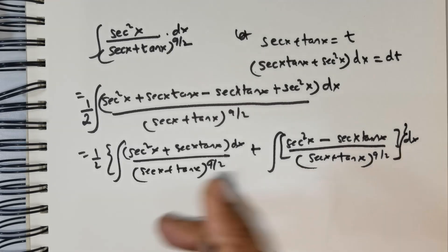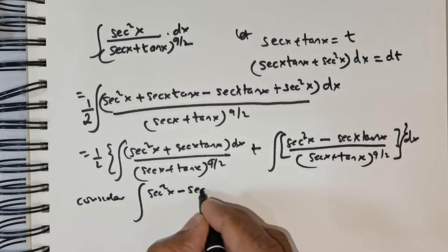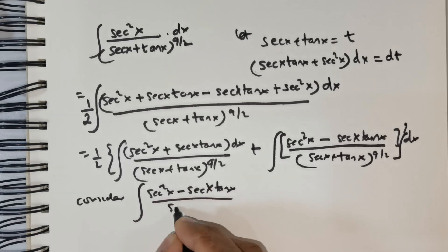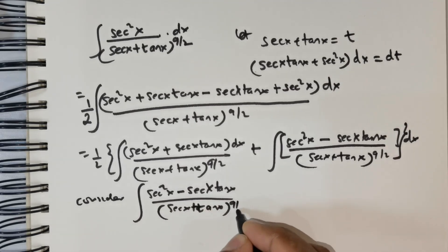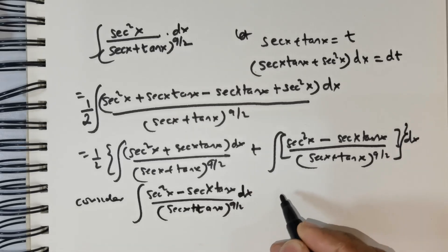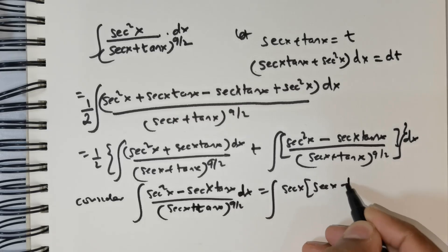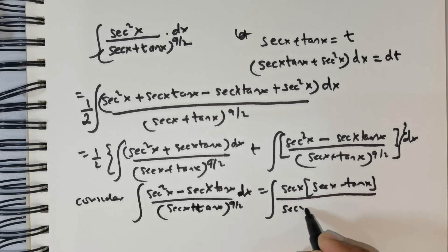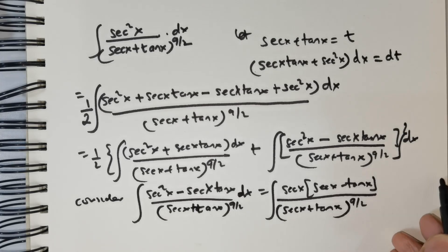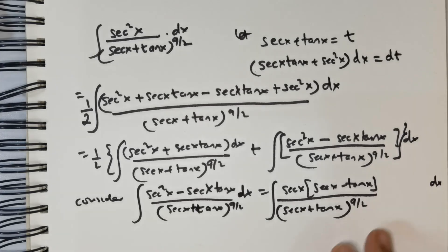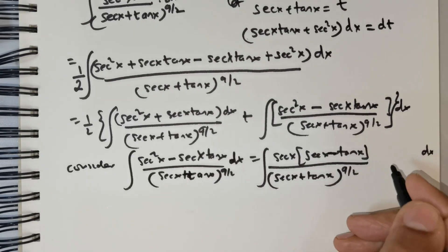Let me consider the second integral: the integral of secant squared x minus secant x tan x divided by secant x plus tan x raised to the power of 9 over 2, with dx. I am going to rewrite this by factoring secant x out of the numerator, giving secant x times the quantity secant x minus tan x, divided by secant x plus tan x raised to the power of 9 over 2, multiplied by dx.